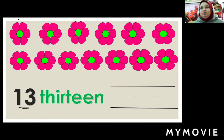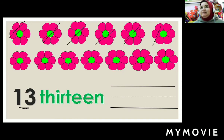Let's count. Count with me, KG1: one, two, three, four, five, six, seven, eight, nine, ten, eleven, twelve, thirteen.